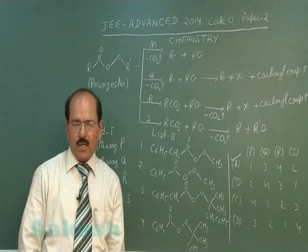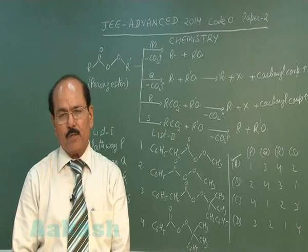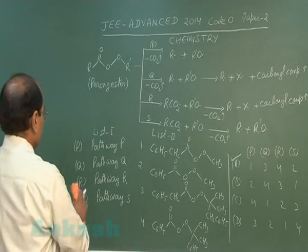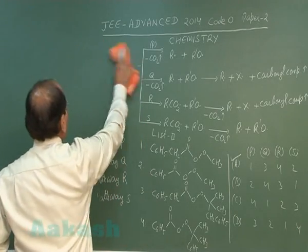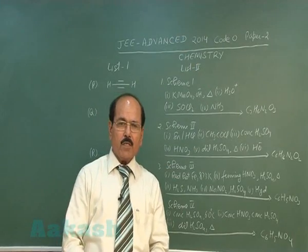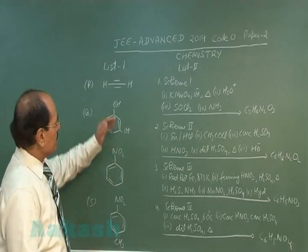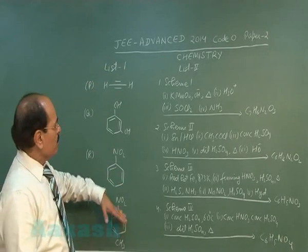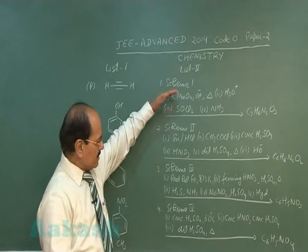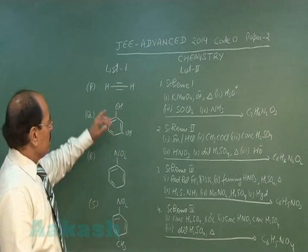We now move on to the last question, that is question number forty of paper two. Here we come to the last question of paper two, question number forty. It gives certain compounds in list one and schemes, four schemes in list two.